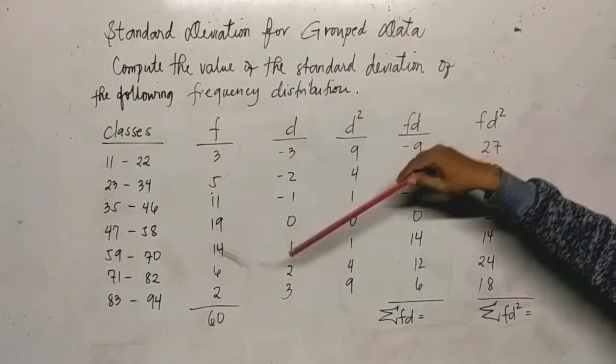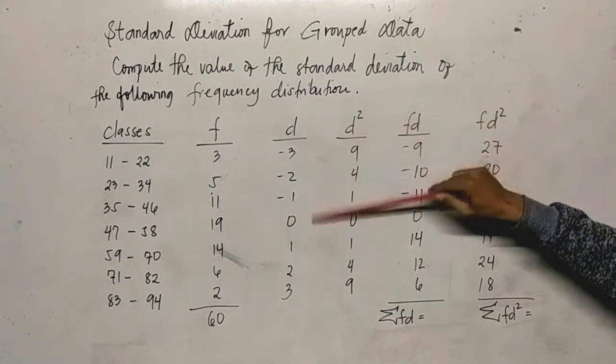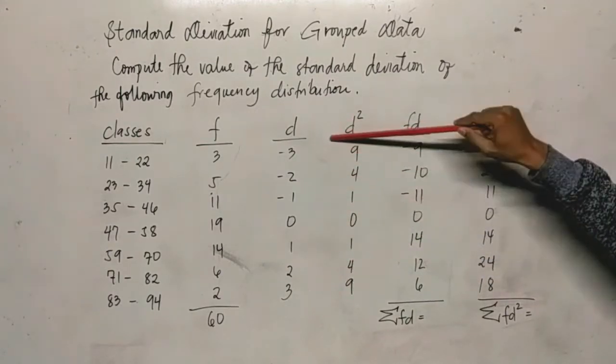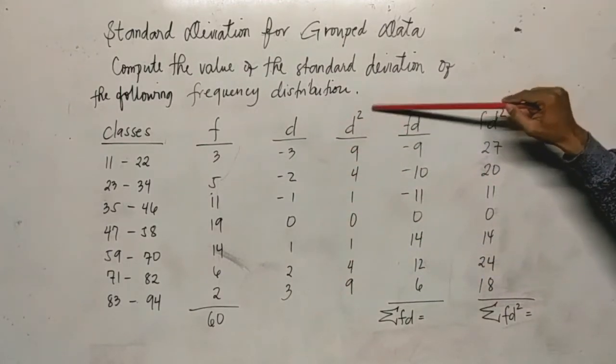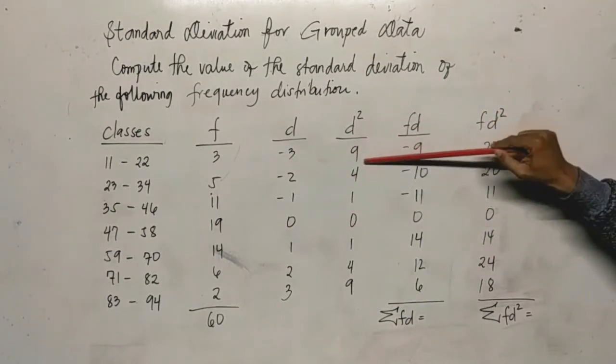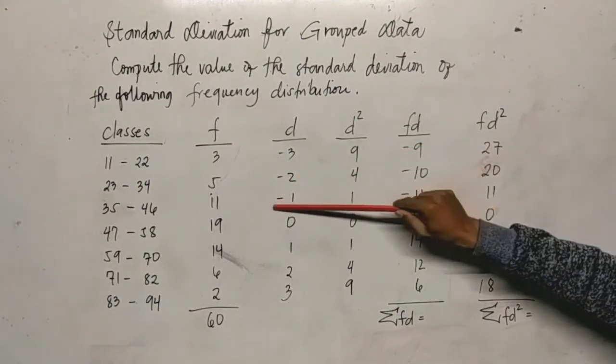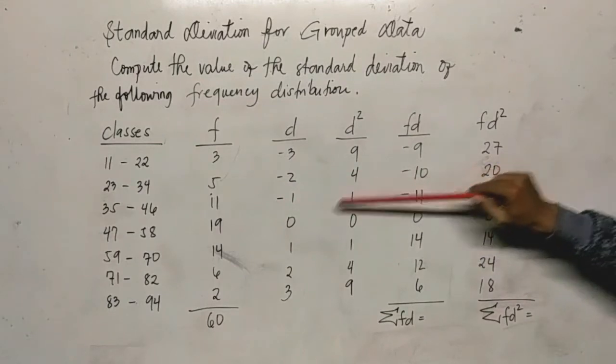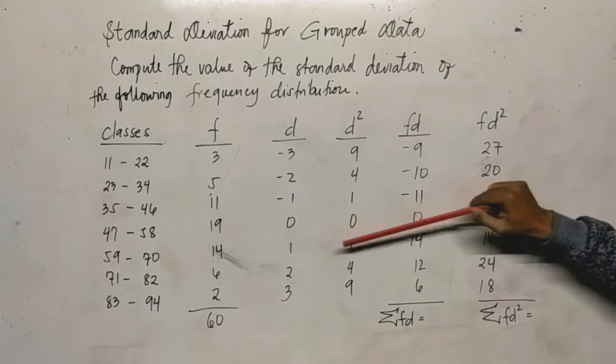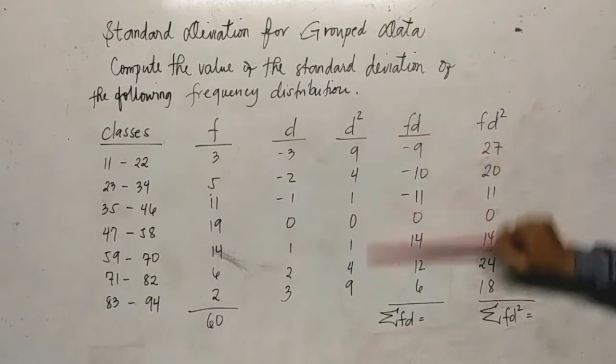Next, there's d squared in the formula. That means we square the deviation values we got. So negative three times negative three equals nine. Negative two times negative two equals positive four. Negative one times negative one equals one. Zero times zero is zero. One times one is one. Two times two is four. And three times three is nine.